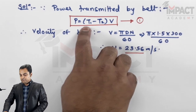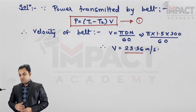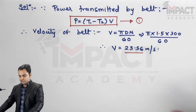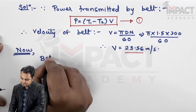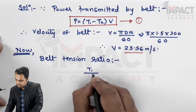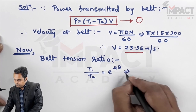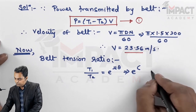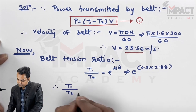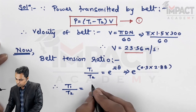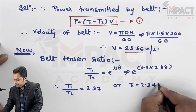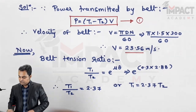With velocity known, T1 and T2 are unknown in equation 1. Using the belt tension ratio: T1/T2 = e^(μθ) = e^(0.3 × 2.88) = 2.37. Therefore T1 = 2.37 × T2, which is equation 2.